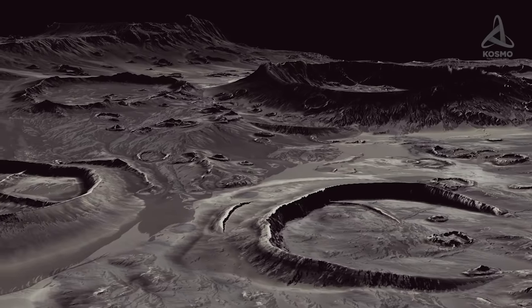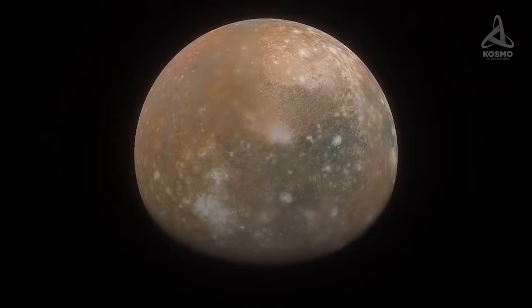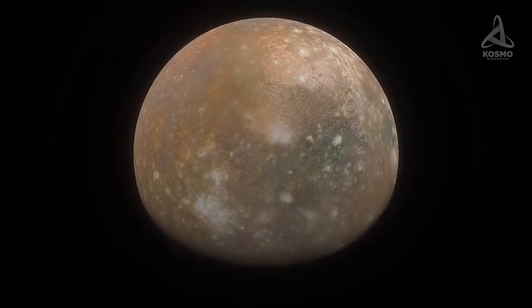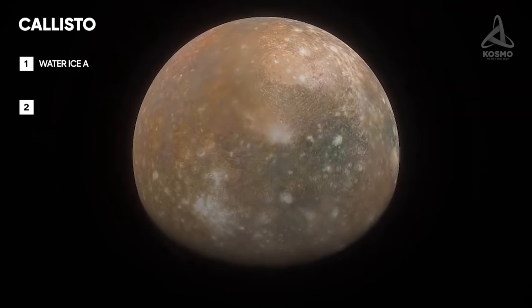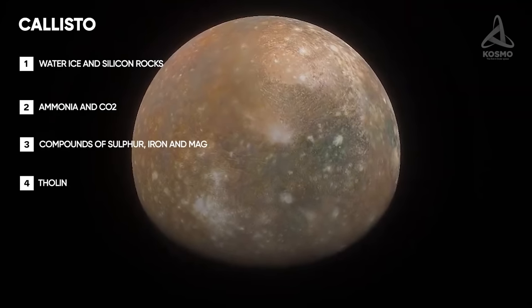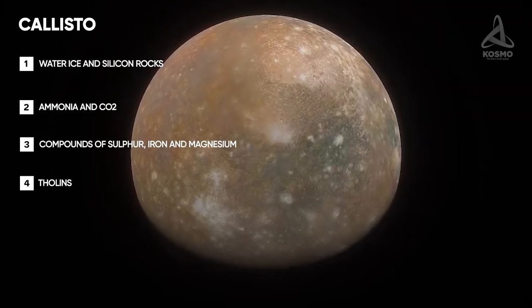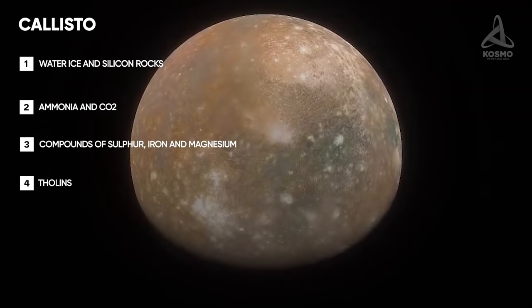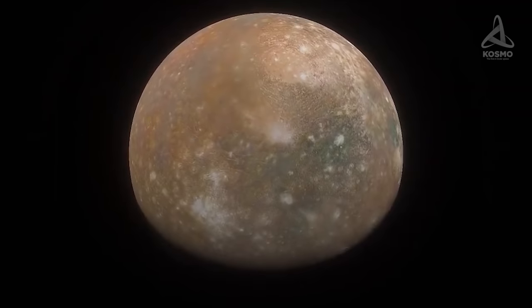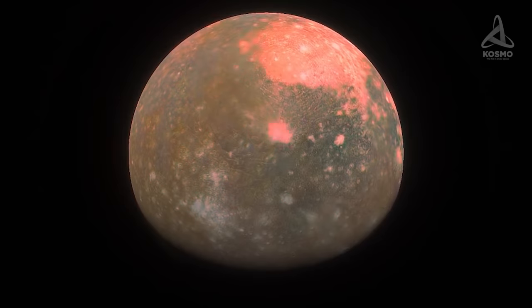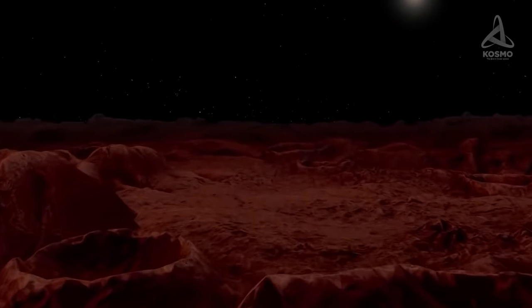Callisto's surface is pockmarked with craters. Spectral analysis of light reflected from this celestial object revealed not only water vapor and silicon rocks, but also ammonia, carbon dioxide, sulfur, iron and magnesium compounds, as well as tholins, complex organic polymers containing nitrogen. These brightly colored substances form on the surfaces of celestial bodies, a result produced by ultraviolet radiation.